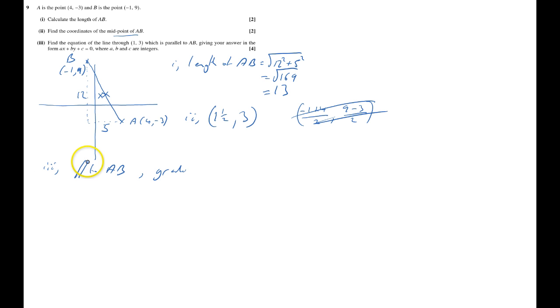So gradient of AB equals change in y over change in x, which equals, well, it's gone down 12 so it's -12 over how far across, 5. So now I know it's going to be y = -12/5 x + c. And having found the gradient I now need to find c by substituting any point on that line, and they've told me the point is (1, 3).